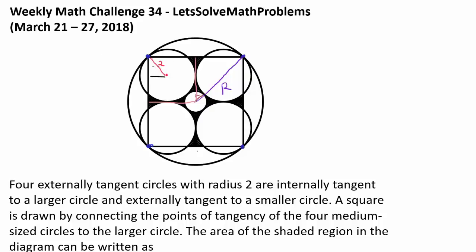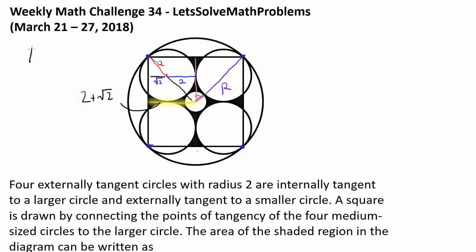We have this radius of 2, and that gives us a 45-45-90 triangle. We know this length is √2, and the radius of the medium-sized circle is 2, so this combined length is 2 plus √2. Capital R is simply an extension of this line, found using the 45-45-90 triangle: the base is 2 plus √2, so capital R equals √2 times (2 plus √2), which equals 2√2 plus 2.